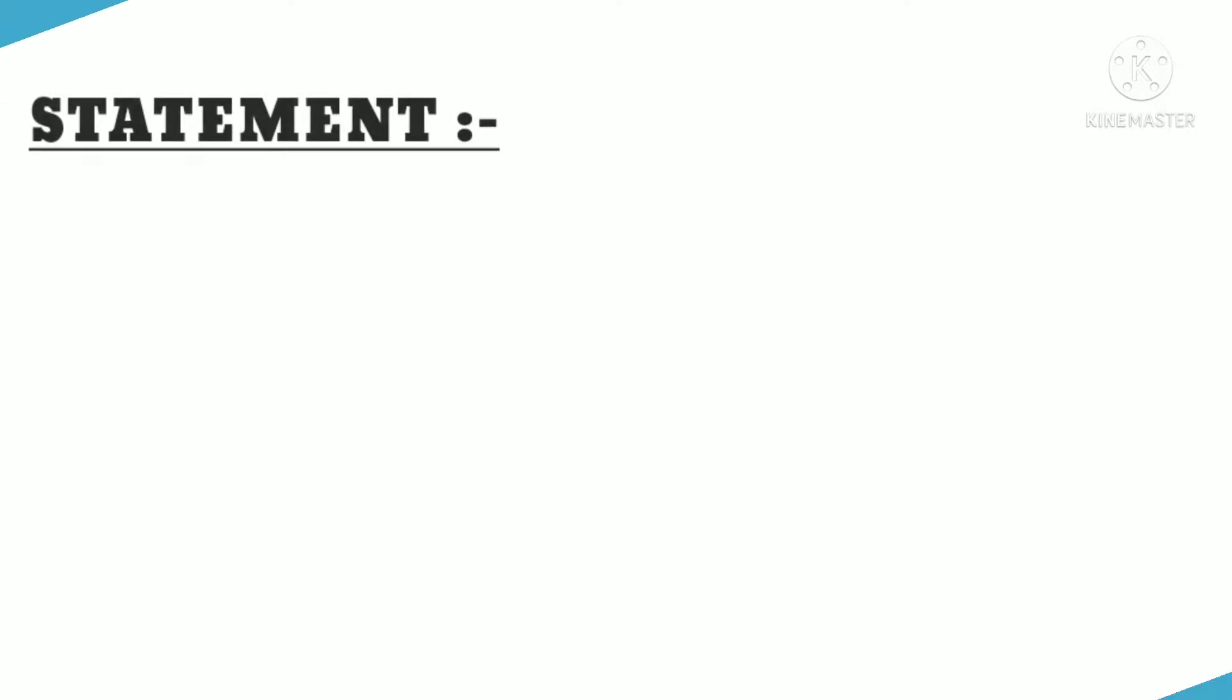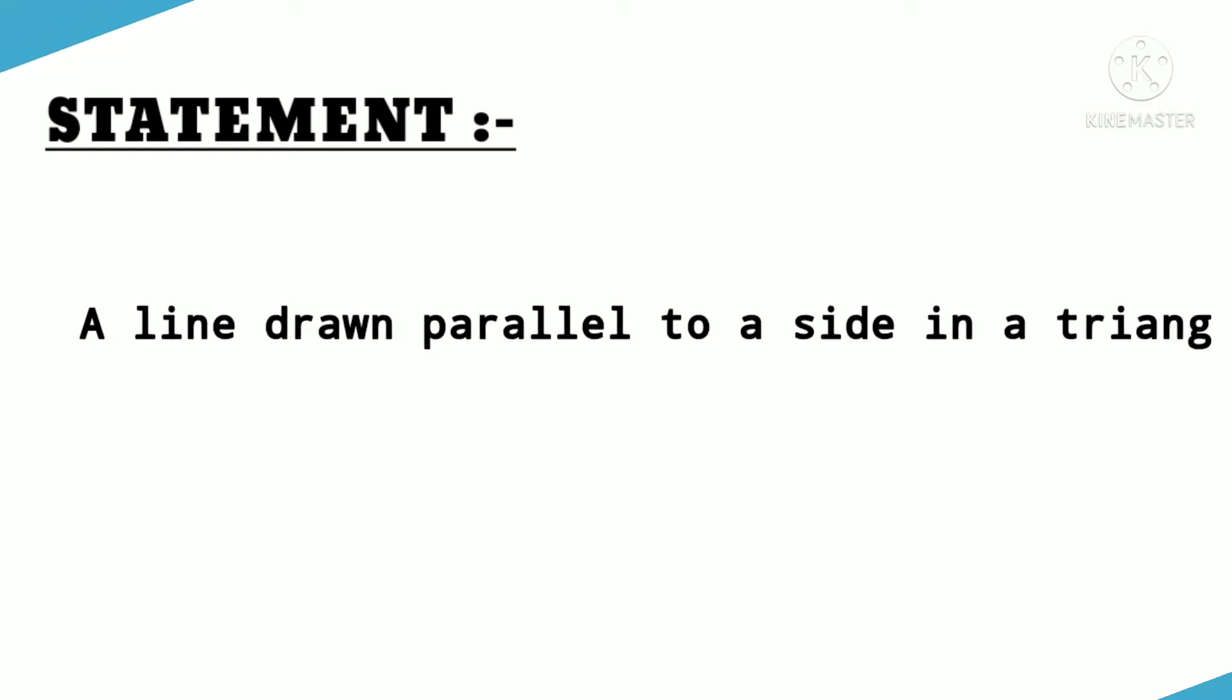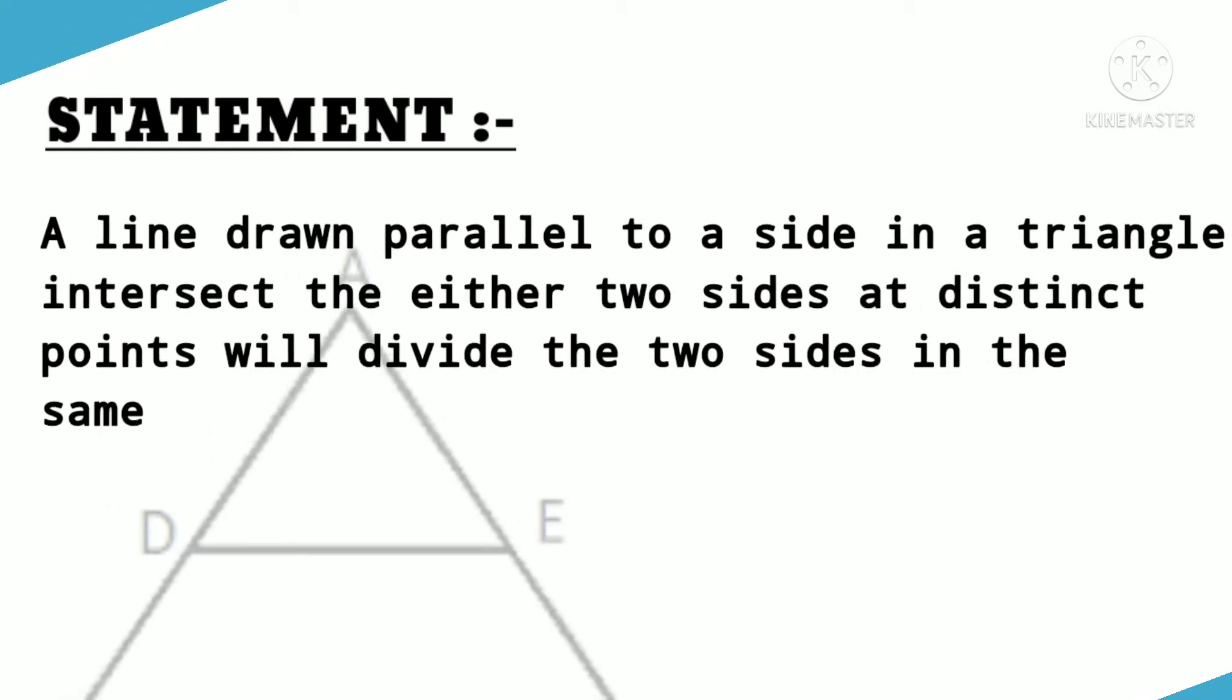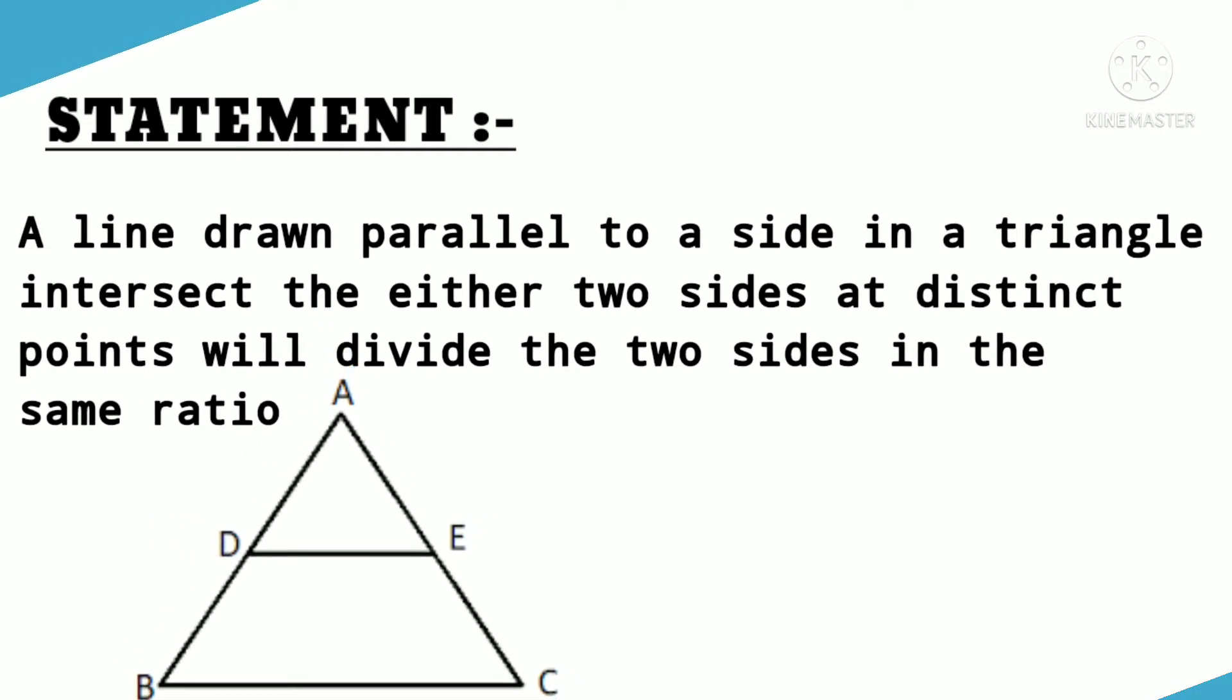First of all, let's understand what is Thales theorem. The Thales theorem states that a line parallel to a side in a triangle intersect the either two sides at distinct points will divide the two sides in the same ratio.